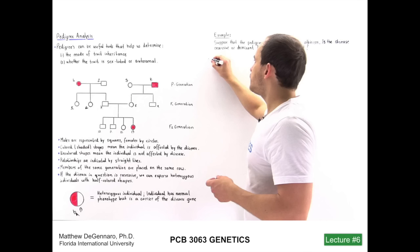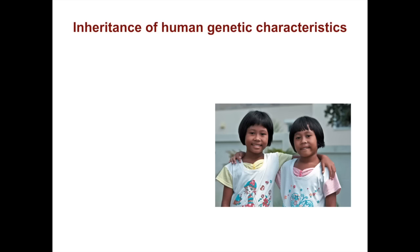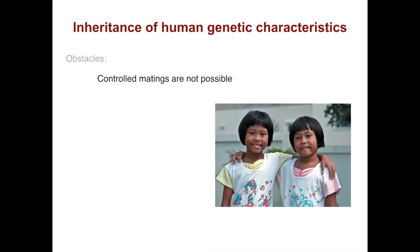Welcome to the lecture. Pedigrees are very useful tools that can help us determine the mode of trait inheritance and whether a trait is sex-linked, dominant, or recessive. Pedigrees are particularly useful because the study of human genetic characteristics can be difficult. There are a lot of obstacles: controlled matings are not possible, humans are not a model organism you can manipulate in the lab, the generation time is quite long, and family size is small.